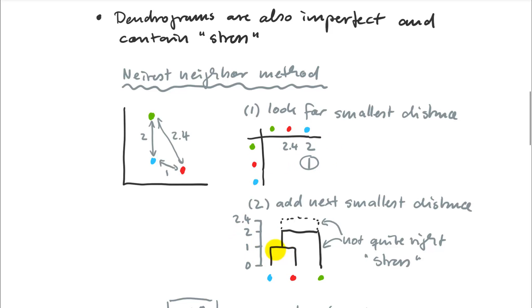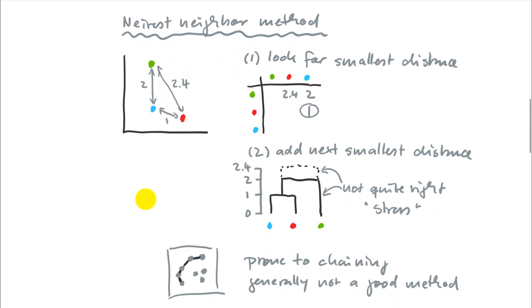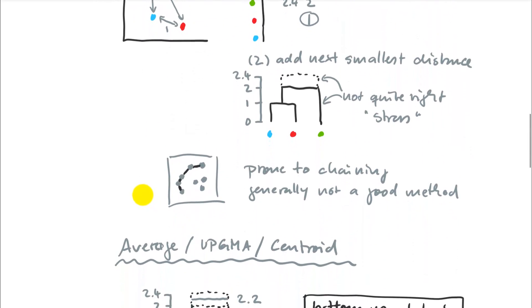But then I immediately get a problem for the next branch of my tree. In the nearest neighbor method, I'm looking for the next smallest distance, that would be a two. I would do the blue to the green and add my green point to the dendrogram. But it's not quite right. The distance between the green and the red point is indicated as two as well now, but really it's 2.4. So that's not an optimal solution.